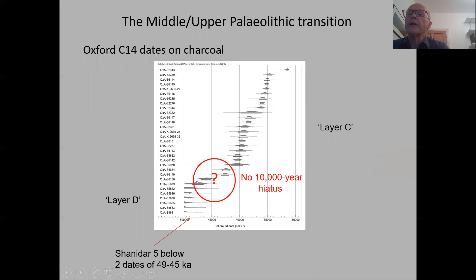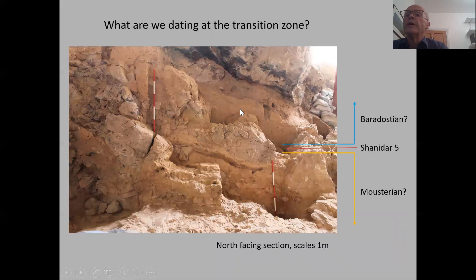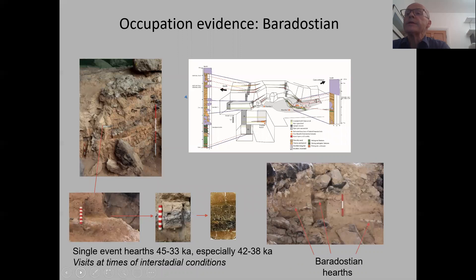The main focus is to talk about the Middle Palaeolithic to Upper Palaeolithic transition. This is our first main suite of Oxford radiocarbon dates, and certainly there isn't a 10,000-year hiatus in the use of the cave. You can see Shanidar 5 is dated around that point. This is part of that transition zone area — the Shanidar 5 location in this gully. Below here the expectation is Mousterian, and somewhere above, Baradostian. This is shown schematically.